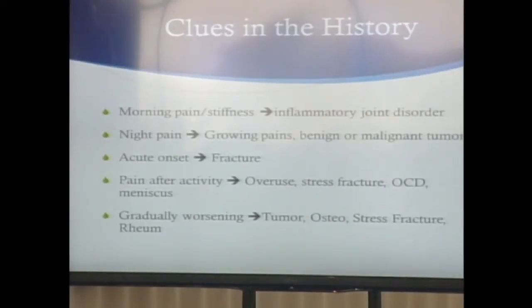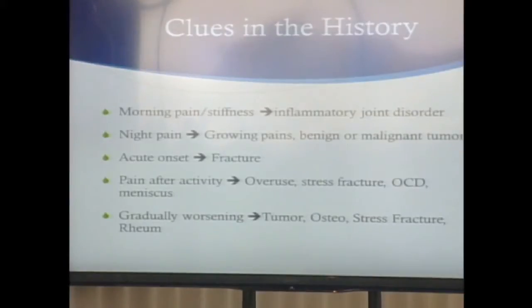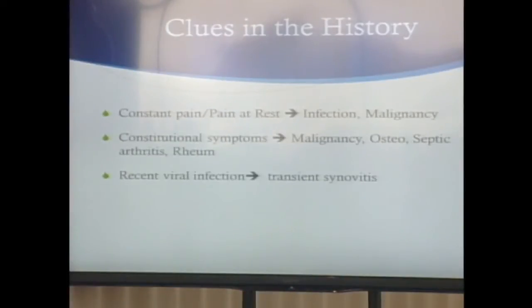Clues from history: morning pain or stiffness, or stiffness after sitting for a long time — think inflammatory or rheumatologic problems. Night pain could be growing pains, which are benign though troublesome, or tumor. Acute onset — first think fracture. Pain after activity suggests overuse, stress fractures, OCD lesions in the knee or ankle, or a meniscus problem such as discoid or a tear. Gradual worsening — think tumor, infection, stress fracture, or rheumatologic problem.